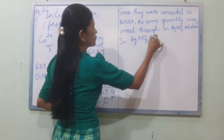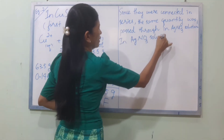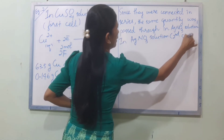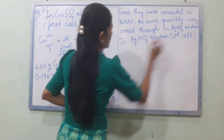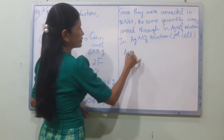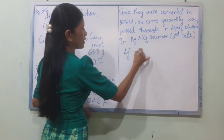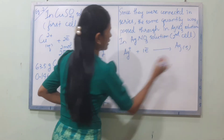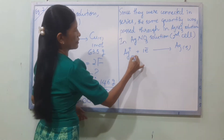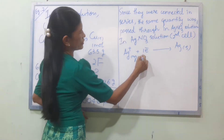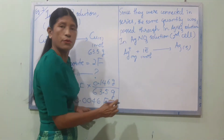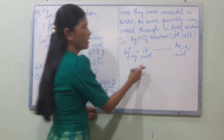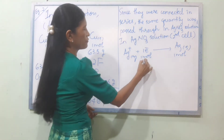For the second cell with AgNO₃ solution: the equation is Ag⁺ plus one electron forming Ag solid. Here, one electron transfers per silver atom, so n equals 1.